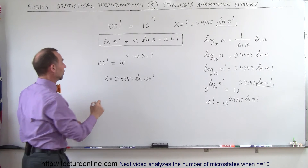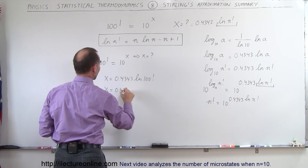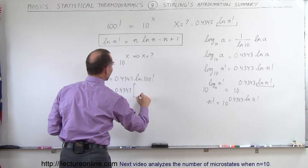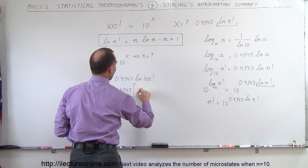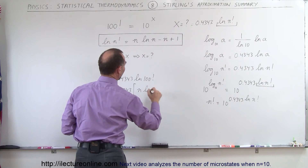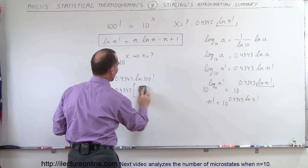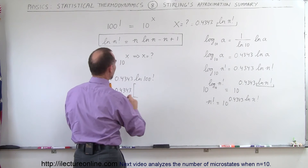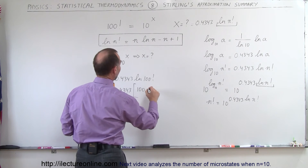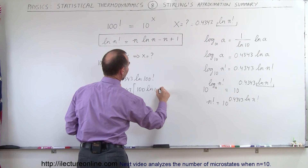So x is going to be equal to 0.4343 times n times the natural log of n. In this case, since we know n equals 100, this becomes 0.4343 times 100 times the natural log of 100.